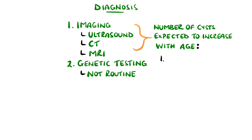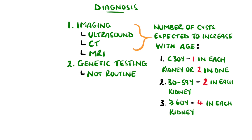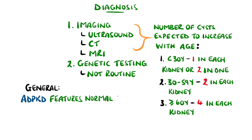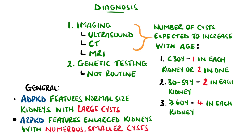For example, below the age of 30 years, there must be either two cysts in one kidney or one cyst in each kidney. Between 30 and 59, there needs to be two cysts in both kidneys, and at the age of 60 or above, there should be four cysts in each kidney. Overall, the autosomal dominant variants typically feature normal-sized kidneys with larger cysts, while the autosomal recessive features enlarged kidneys with more numerous but smaller cysts.